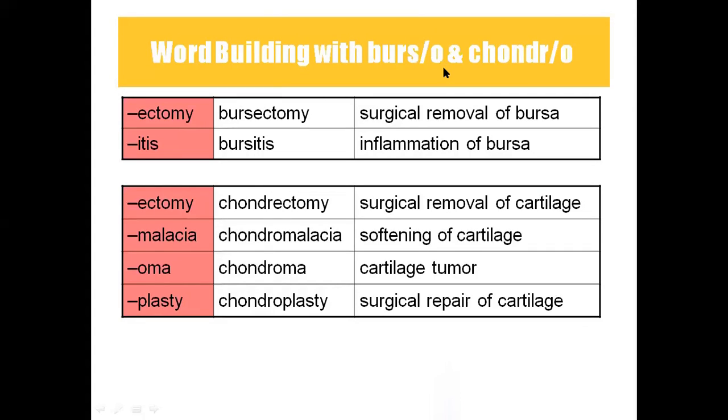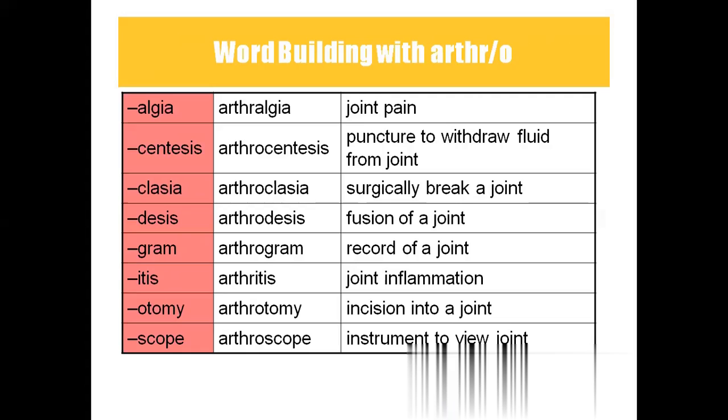Next is arthralgia. Arthro means joint. Arthralgia — algea means pain. So arthralgia means joint pain.